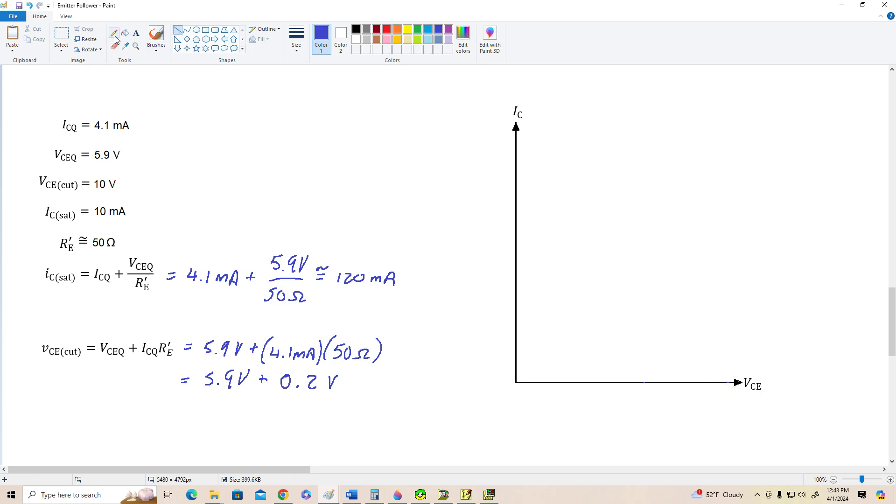Alright, so we hardly get any dynamic range or compliance out of this amplifier. But let's go ahead and draw our DC load lines just to illustrate how bad this circuit is. We've got 10 volts for VCE cutoff. And we've got 120 milliamps roughly for the AC collector saturation current. Our VCE cutoff for the AC load line is about 6.1 volts. So let's draw that AC load line extending from here to 6.1.